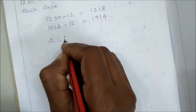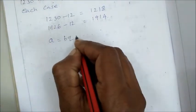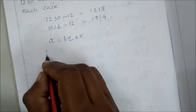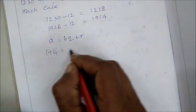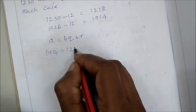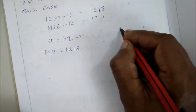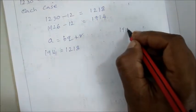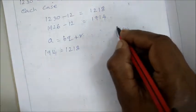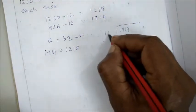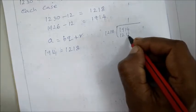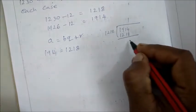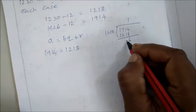Using the Euclidean algorithm, A equals BQ plus R. Here A is 1914 and B is 1218. So 1914 equals 1218 times 1 plus 696. The remainder is 696.